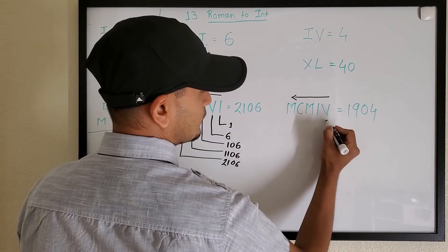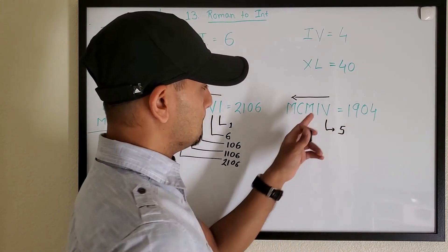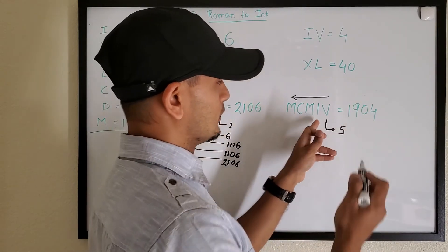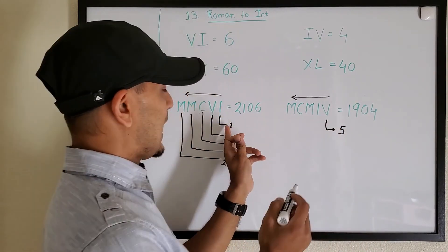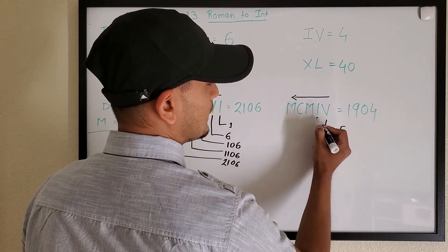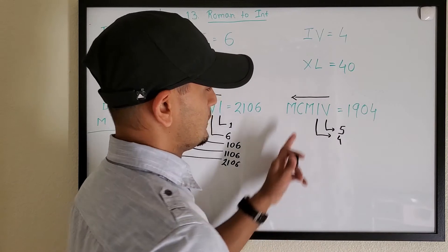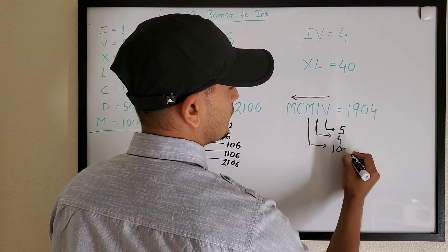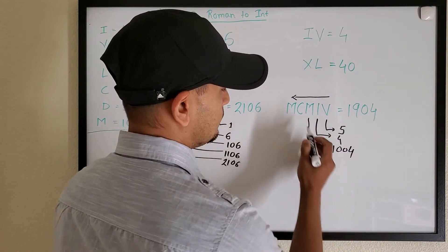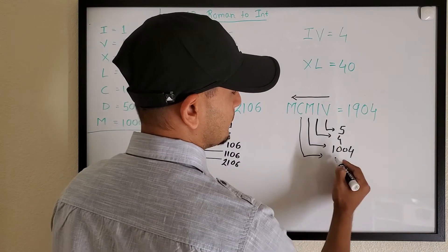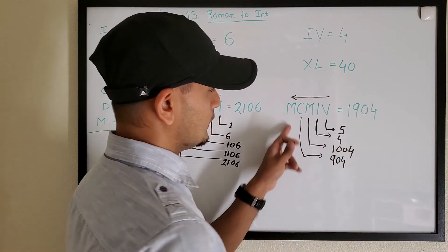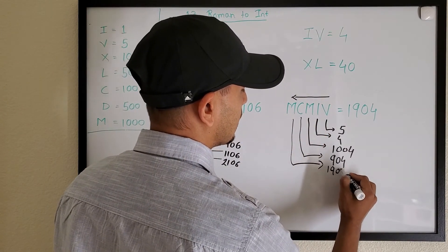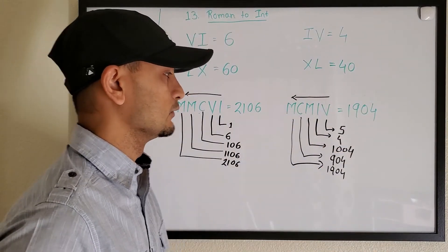We'll start looking in the reverse order, so this is 5, but as soon as we see that the next number in the reverse order, if it's less than the previous number, instead of adding we'll subtract. So 5 minus 1 is 4. Now we see 1000 is more than 1, so we'll say 1004. Now 100 is less than 1000, so we'll subtract and that will become 904. Now 1000 which is more than 100, so we'll add it and that gives us 1904. That's the number that we're looking for.